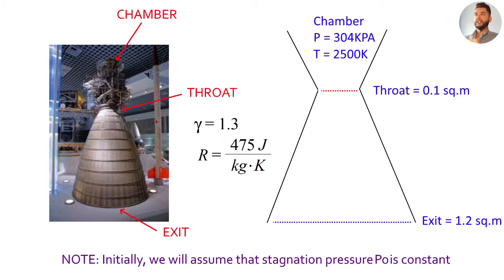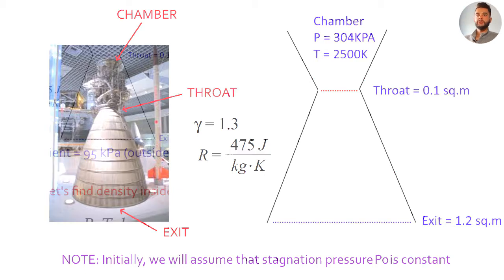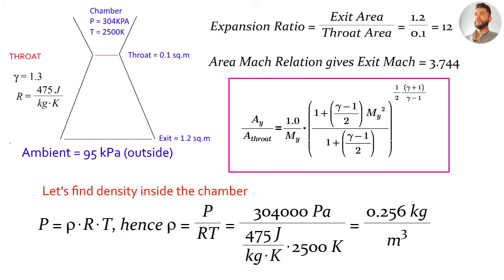Initially to make the problem easier we can assume isentropic flow everywhere. That means the stagnation pressure everywhere in the nozzle is constant. Let's begin first with the expansion ratio. It's just a ratio of the areas. It'll be 1.2 meters square over 0.1 meters square which is 12. By using this number 12 we can then find the Mach number at the exit in the case of isentropic flow. It's just the area Mach relation. You can either use this equation or use a graph and then find the Mach number. It gets about 3.744 at this area ratio. Then we can find density. Since air is an ideal gas P equals rho RT. Density equals P over RT which is about 0.256 kilogram per meter cube.